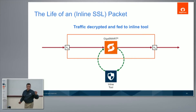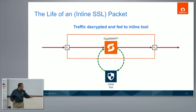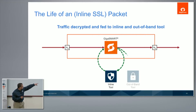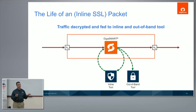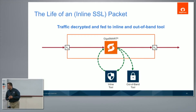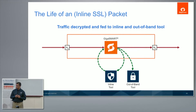Once decrypted, if the inline tool says the traffic is clean, we re-encrypt it and send it over. Since we're decrypting it, we can make a copy and also feed it to an out-of-band tool simultaneously — all of that will be shown in the demo. Regarding DTLS: that's where you take TLS traffic and put it in UDP, used for real-time applications like voice. We don't currently support that, but it's a great roadmap item.